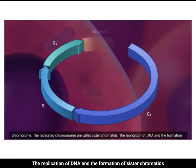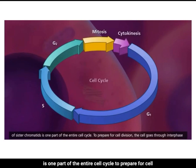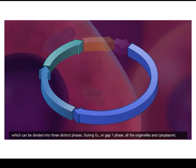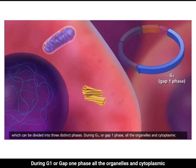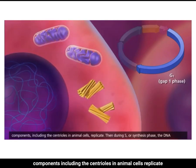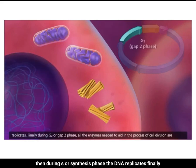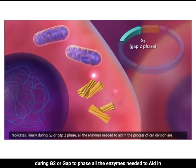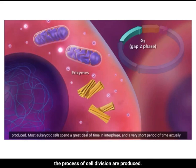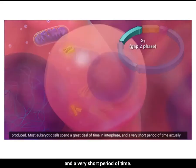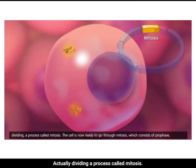The replication of DNA and the formation of sister chromatids is one part of the entire cell cycle. To prepare for cell division, the cell goes through interphase, divided into three distinct phases. During G1 or Gap 1 phase, all organelles and cytoplasmic components — including centrioles in animal cells — replicate. Then during S or synthesis phase, the DNA replicates. Finally, during G2 or Gap 2 phase, all the enzymes needed to aid cell division are produced. Most eukaryotic cells spend a great deal of time in interphase and a very short period actually dividing — a process called mitosis.